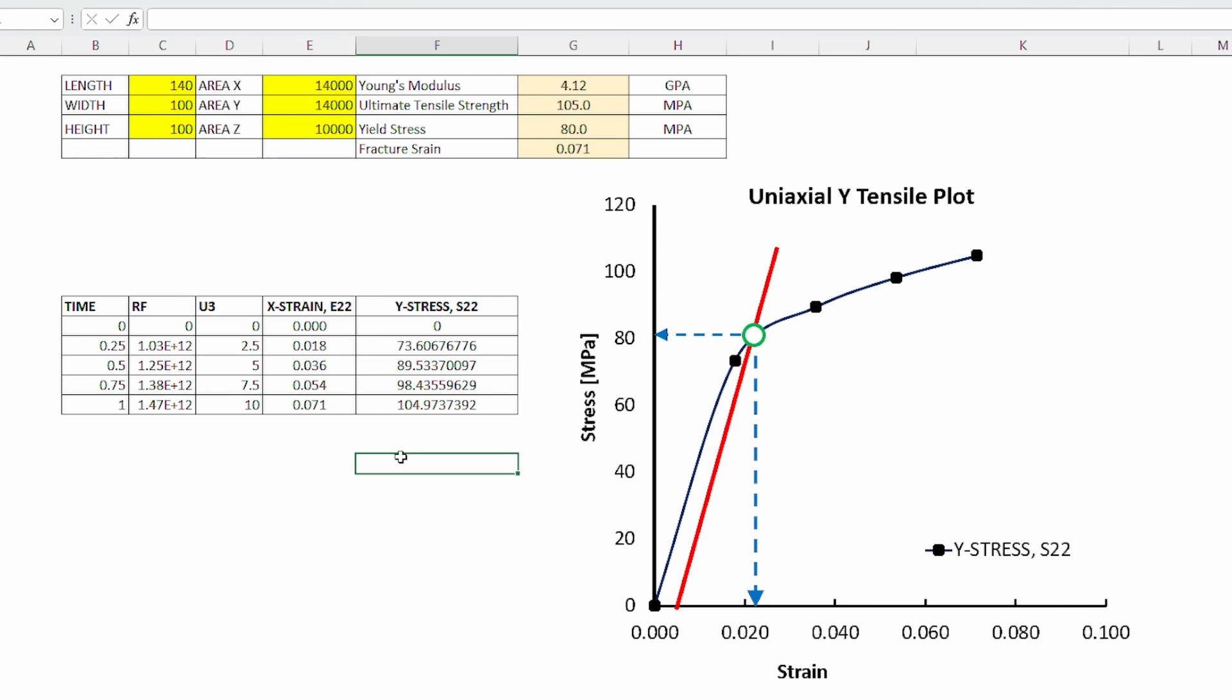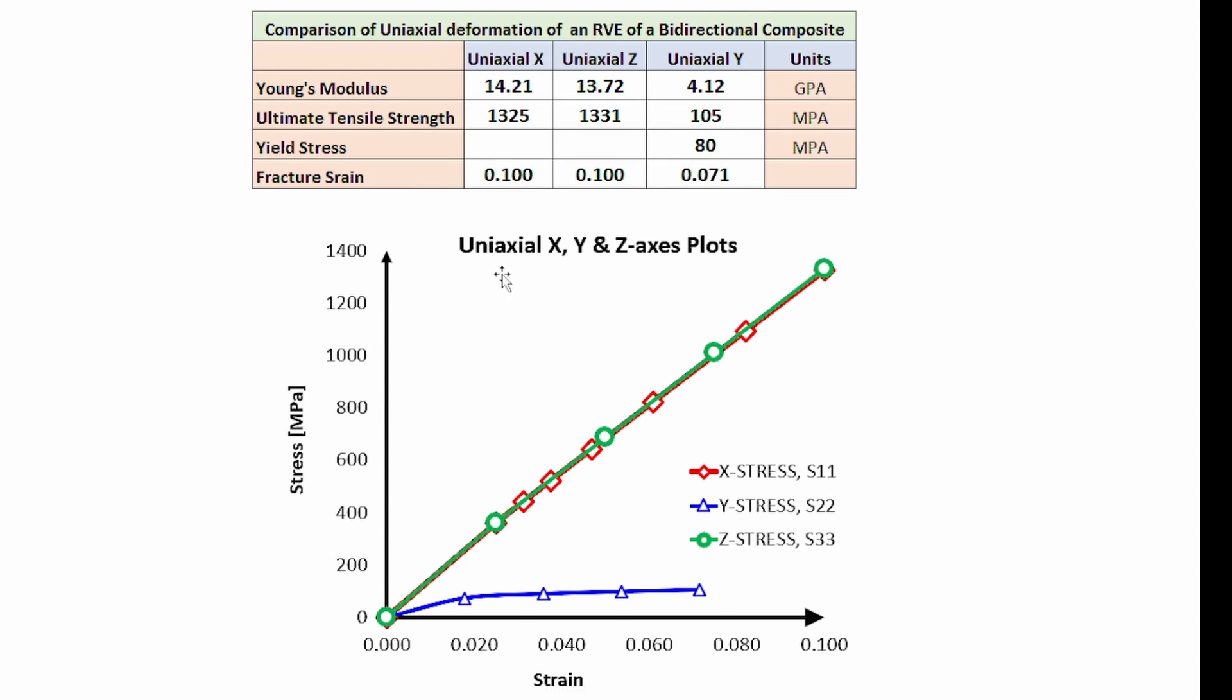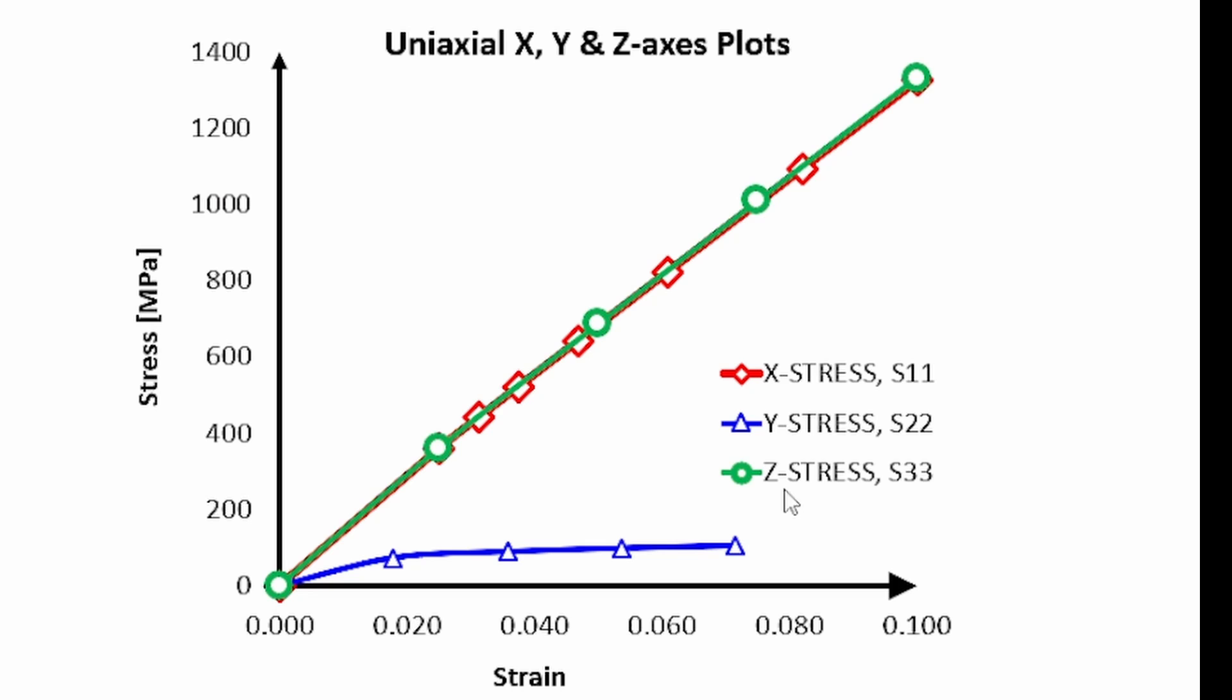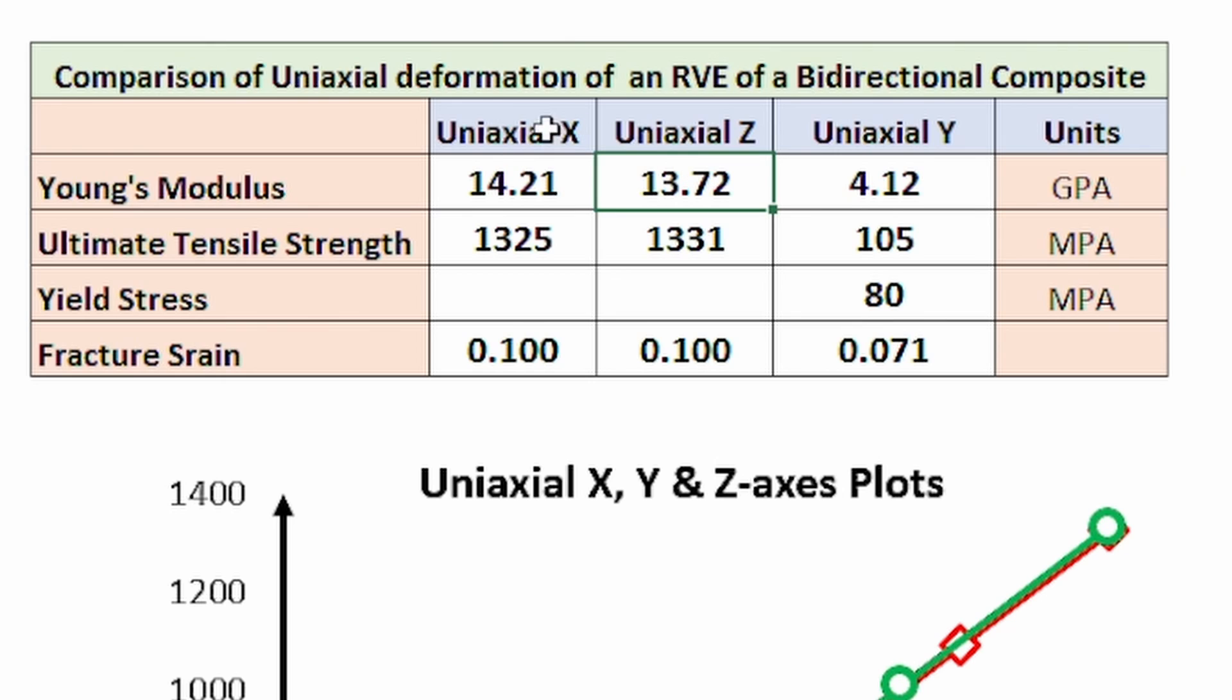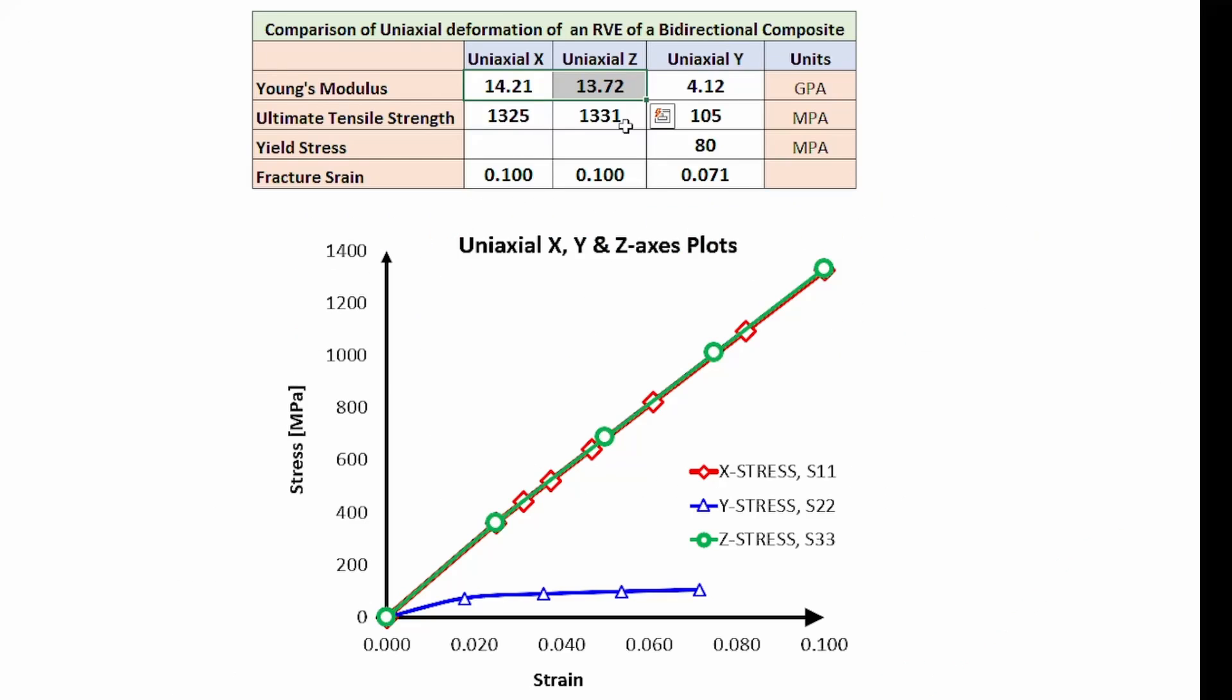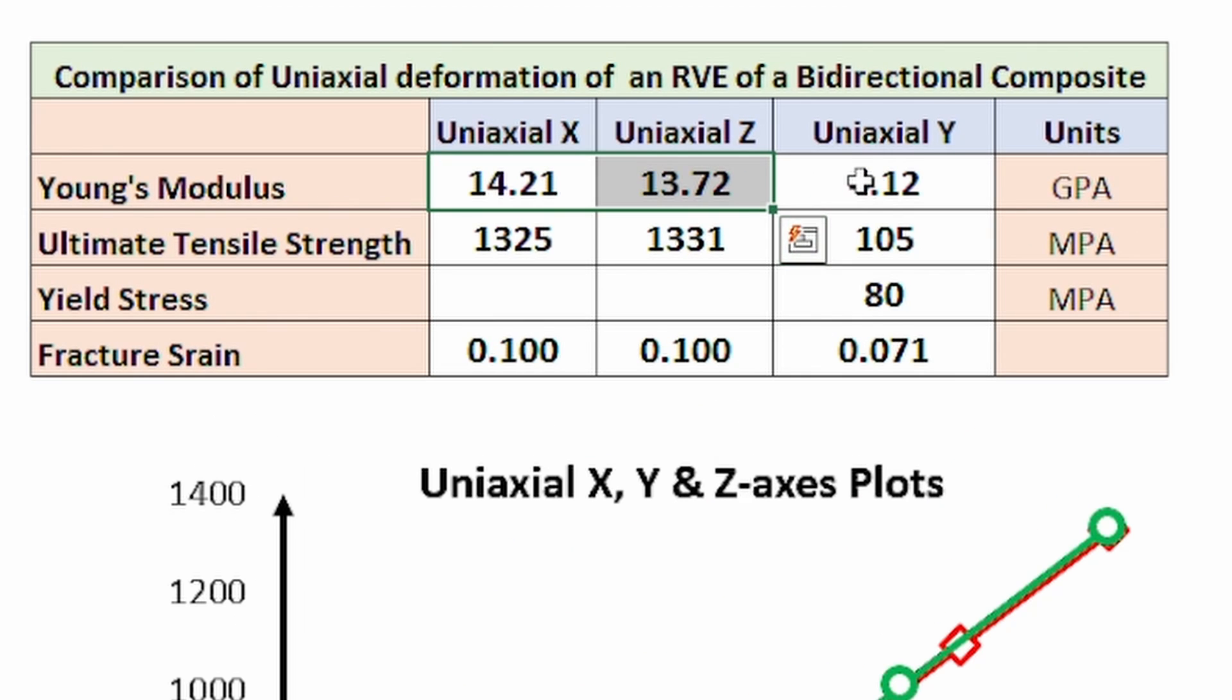Remember this system has got the yield stress of the polypropylene at 40 megapascals. Clearly the introduction of these fibers in the X and Y direction, in the bidirectional sense, has amplified this off-axis stress up to double the yield stress of the polymer. And so the next thing is to compare all those three sets of data. The Young's modulus for the X and Z direction are approximately exactly the same, 14 megapascals. They are both on top of each other, which is good because it tells you that the in-plane behavior of a bidirectional composite as expected is coming up accurately in the right way. Of course, the out-of-plane value will be much weaker, and that's what we're seeing here as 4.12 megapascals.